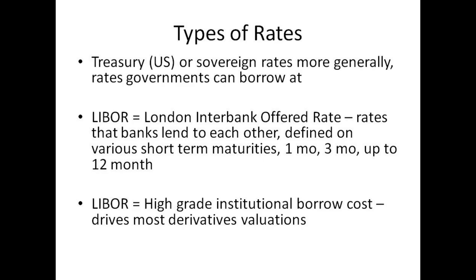LIBOR stands for the London Interbank Offered Rate — the interest rate at which large international banks lend to each other. It's the primary benchmark for short-term rates around the world. LIBOR rates are calculated for five currencies and seven borrowing periods ranging from overnight to one year, and are usually published every day. LIBOR is a high-grade institutional rate that is higher than the sovereign or treasury rate, simply because it's riskier to lend money to a bank than to a sovereign government.